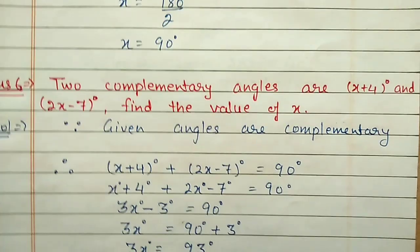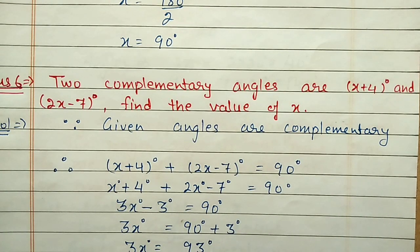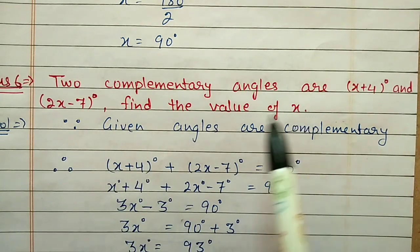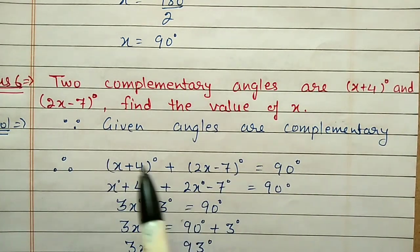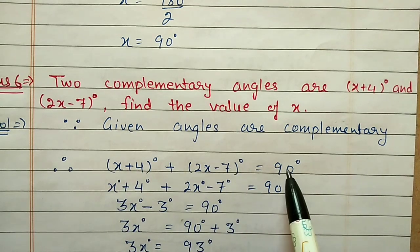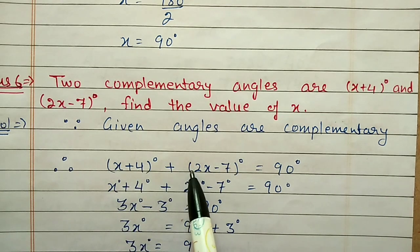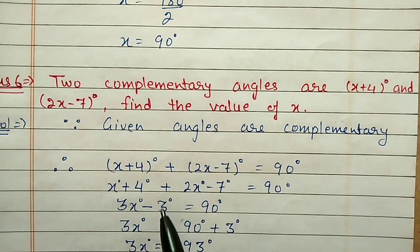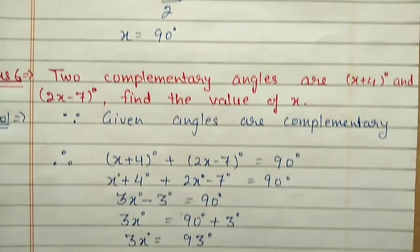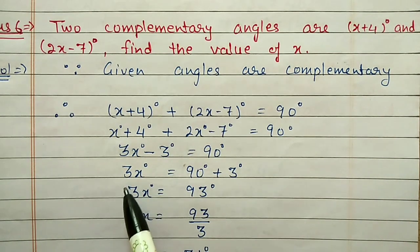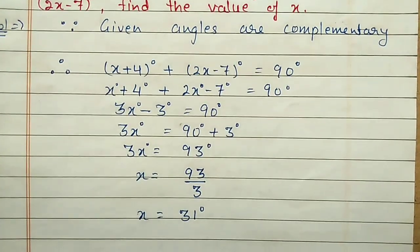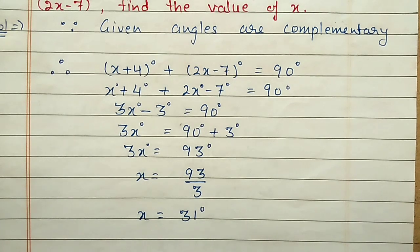Question number six: two complementary angles are (x + 4) and (2x − 7). Find the value of x. Because the two angles are complementary, their sum equals 90 degrees. So (x + 4) + (2x − 7) = 90. Combining like terms: 3x − 3 = 90. Shifting −3 to the other side gives 3x = 93. Dividing by 3, x equals 31 degrees.